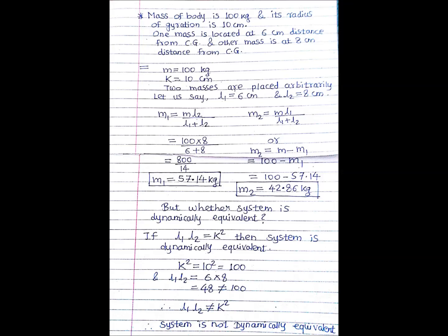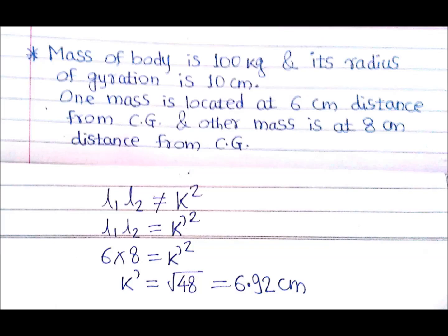The two-mass system in the second numerical is a non-dynamically equivalent system, but it will have its own radius of gyration. We set L1·L2 equal to K'², where K' is the radius of gyration for the non-dynamically equivalent system. K' equals √48 equals 6.92 cm, which is very different from the actual radius of gyration of 10 cm, and that difference is why this system is non-dynamically equivalent.